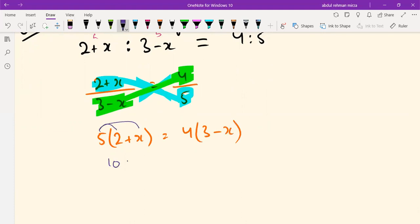Cross multiplying: 5 times (2+x) equals 4 times (3-x), which gives us 10 + 5x equals 12 minus 4x.